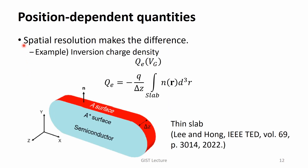The difference comes from the spatial resolution. The compact model tries to express the inversion charge density as a function of the gate voltage and does not consider the position-dependent electron density. On the other hand, in the device simulation we can calculate the electron density N(r) at every position. By integrating it over the cross-section, the inversion charge density can be easily evaluated. This is the key difference.